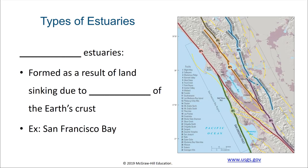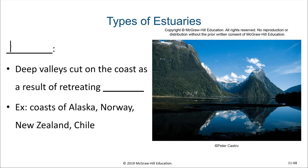There are also tectonic estuaries, where land bordering the oceans begins to subside due to the movements of the earth's crust at faults. San Francisco Bay is an example of a tectonic estuary. The last category of estuaries are fjords — deep valleys cut on the coast as a result of retreating glaciers. These can be found in Alaska, Norway, New Zealand, and Chile.